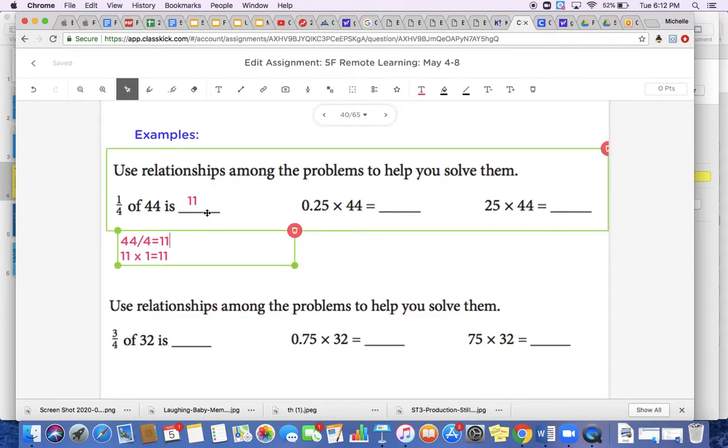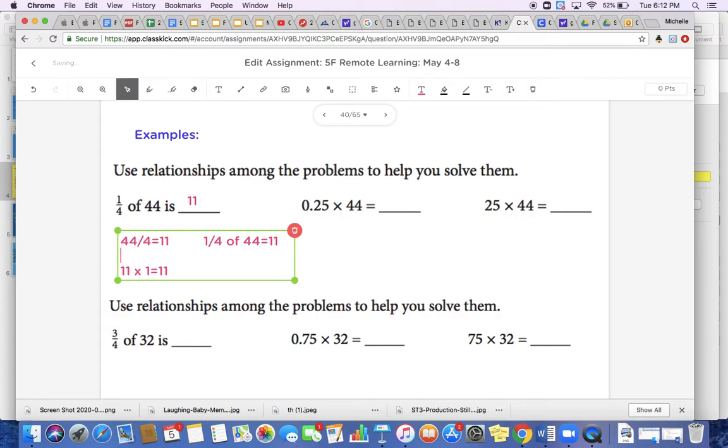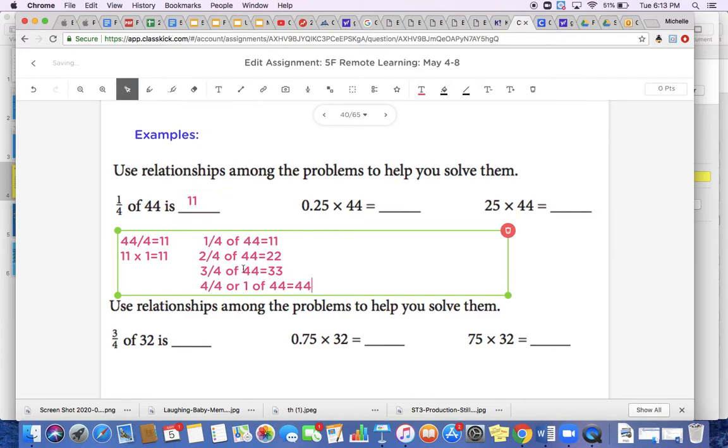Now if I want to check that, I can do the opposite. I know that division and multiplication, they're kind of like siblings but they're opposite. They're together, we need them, and we can use them to check each other. So let's see, 1/4 of 44 equals 11. Well then that must mean that 2/4 of 44 equals 22. I would add 11 every time. So then 3/4 of 44 would equal 33, and 4/4 or one whole of 44 would equal 44. Is that correct? Perfect.